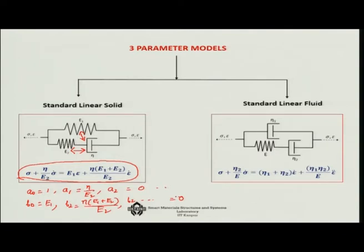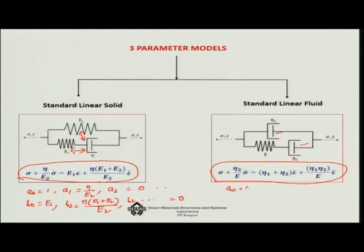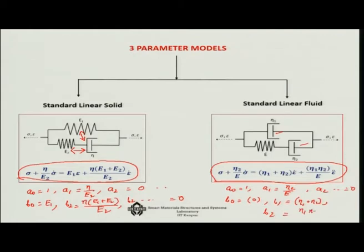The standard linear fluid model uses two dampers in parallel with a spring-damper combination in series. For this model: a0 equals 1, a1 equals eta2/E (a2 onwards 0); b0 equals 0, b1 equals eta1 plus eta2, b2 equals eta1·eta2/E, and the rest are 0. This is again a special case of the generalized Hooke's law.